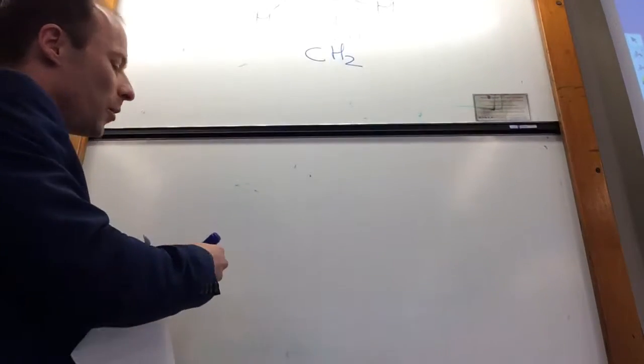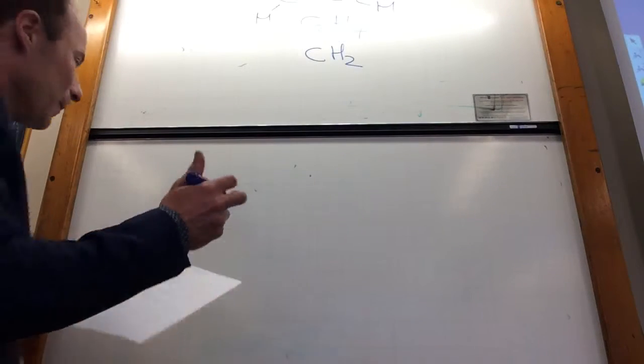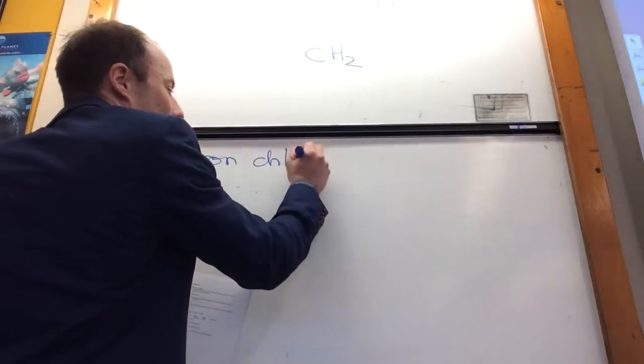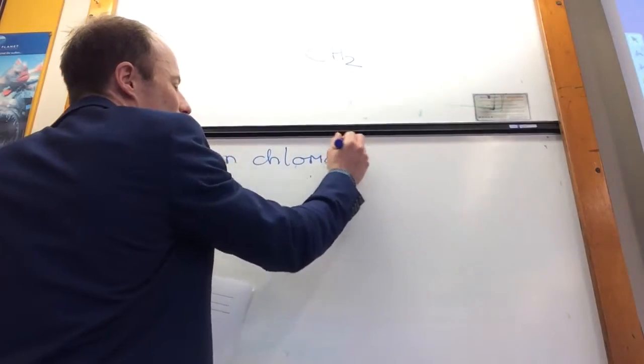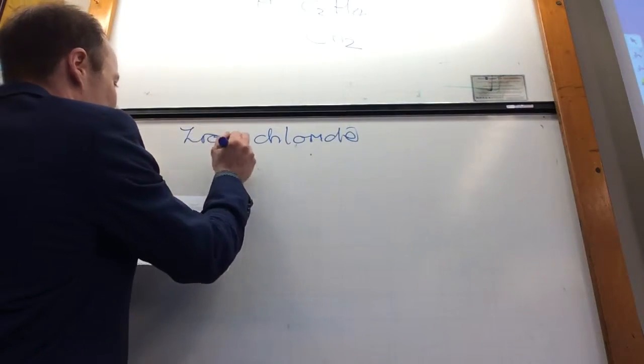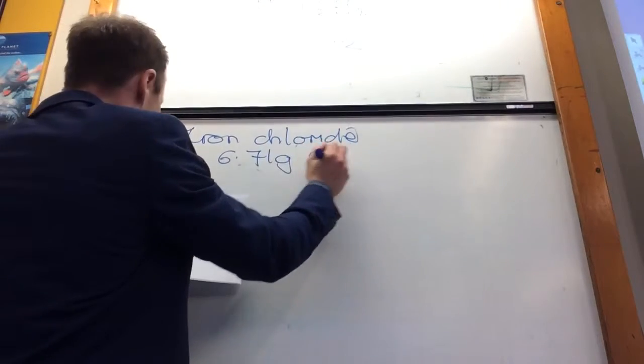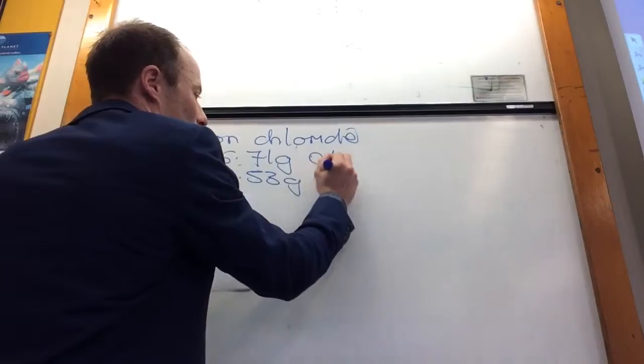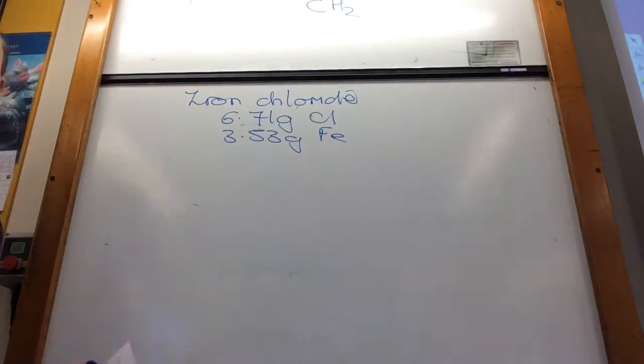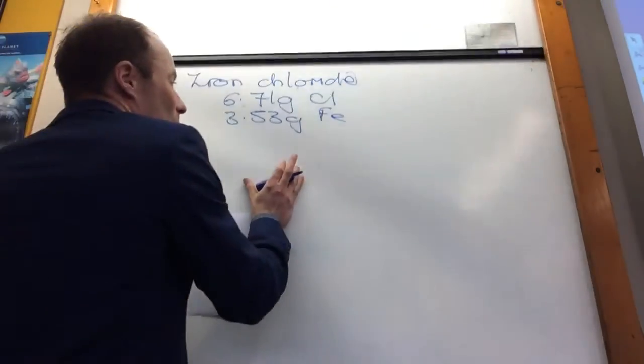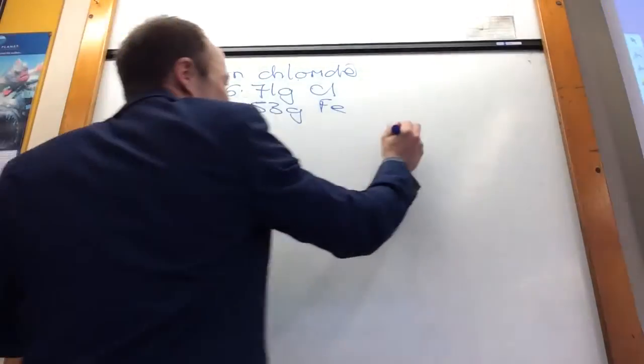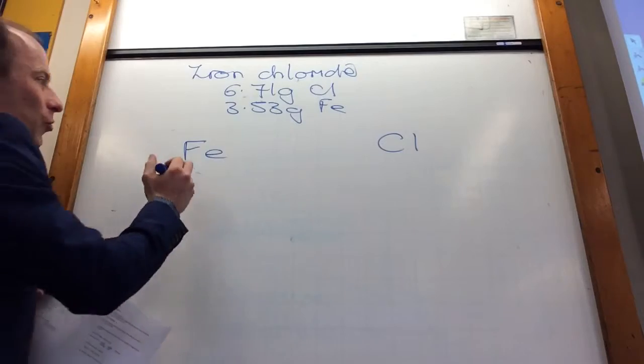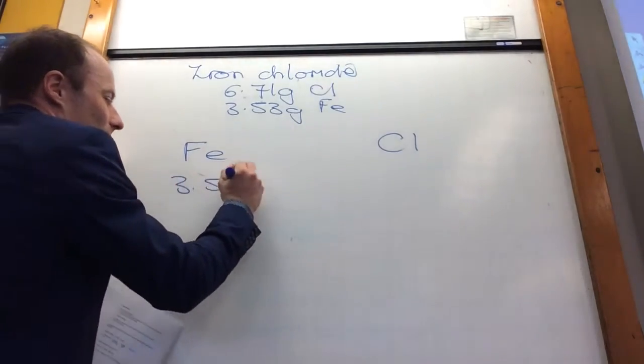Let's go through working out an example. So this is all written down for you. So let's say they give you iron chloride. And they tell you that in iron chloride, I've got 6.71 grams of chlorine and 3.53 grams of iron. And they say, what's its formula? Easy peasy.